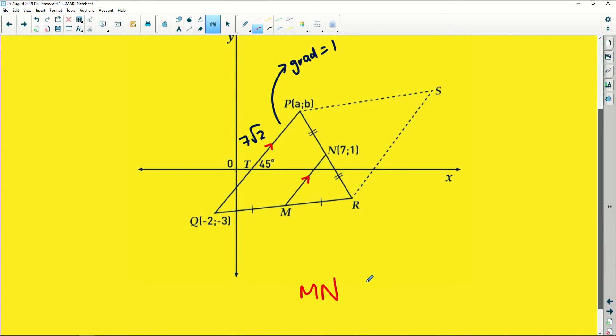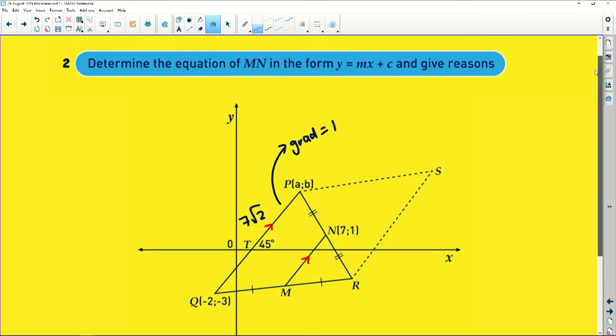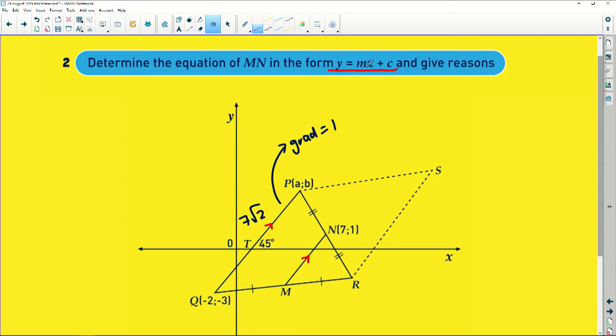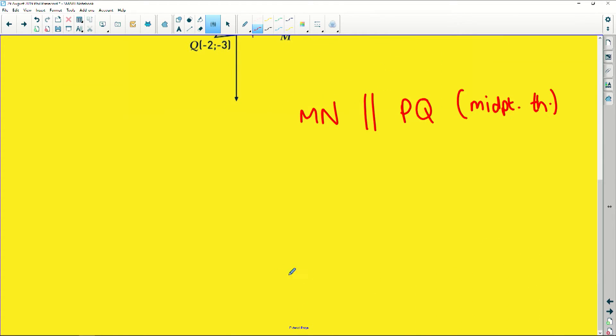We've already identified that these two are parallel because of midpoint theorem. So let's write that down. MN is parallel to PQ. Remember, you have to give a reason, midpoint theorem. Now, what do we know about parallel lines? We've been asked to find the equation of the line. This M represents the gradient. Remember, we need gradient to find the equation of the line. And we've just found that the gradient of this line is 1. Parallel lines have equal gradients. So we can say, therefore, the gradient of MN is equal to the gradient of PQ because they are parallel lines. And therefore, the gradient of MN is equal to 1.